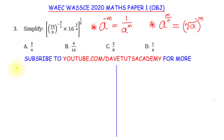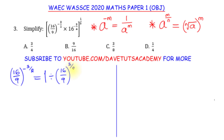First, we have 16 over 9 raised to power minus 3 over 2. Using the law of indices, this will be 1 divided by 16 over 9 raised to power 3 over 2. I've taken care of the negative power, and this is the same as 9 over 16 raised to power 3 over 2.